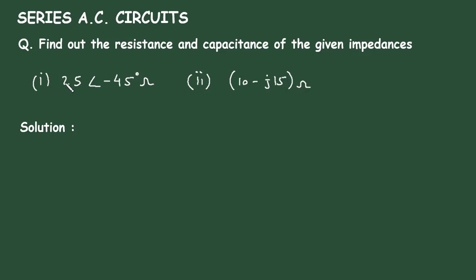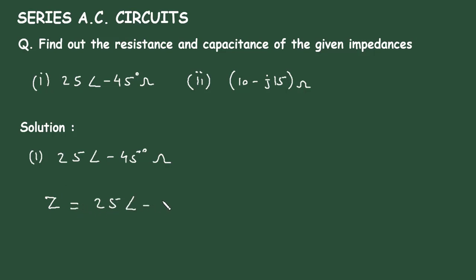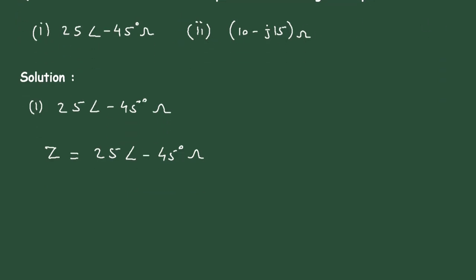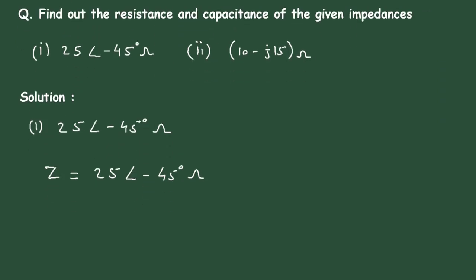Solution. First we will solve number 1: Z = 25 at an angle of minus 45 degrees ohm. This is the value of impedance Z. The negative sign represents capacitance. This is called the polar form.